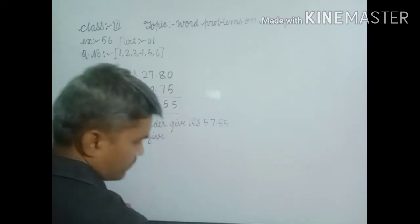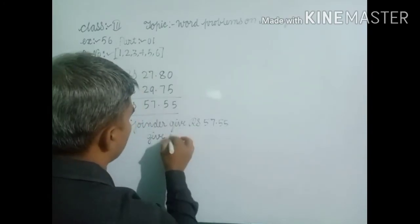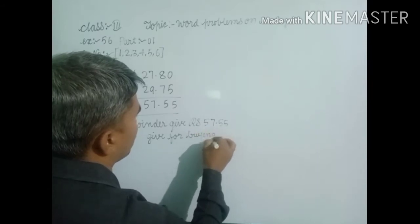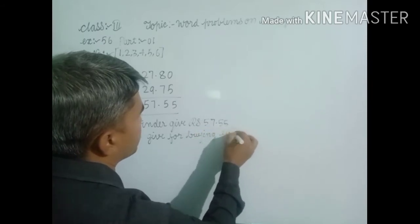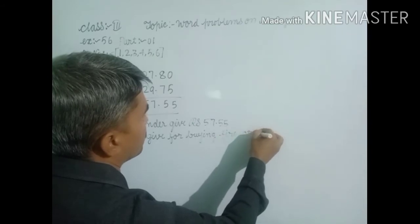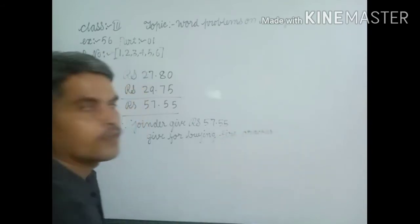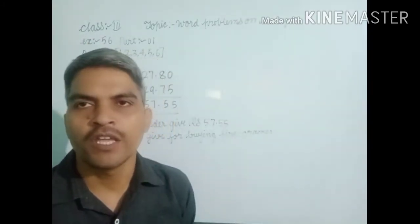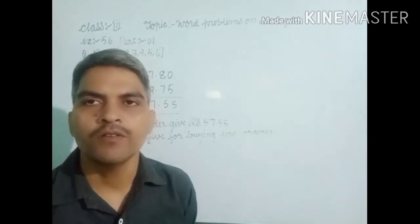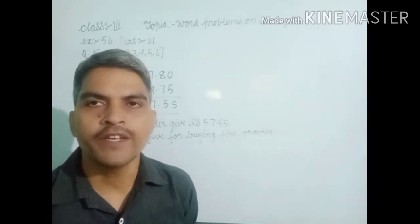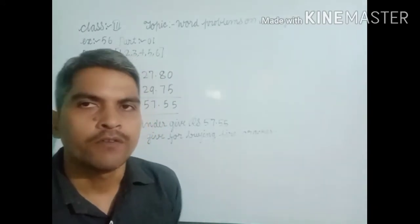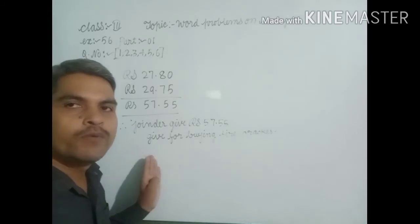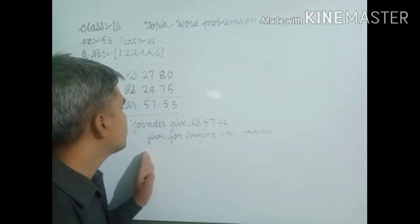I hope that you understand. In first question, on the eve of Diwali, Joginder, where you add them, then you find out total amount for buying firecrackers by Joginder.